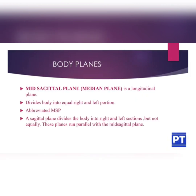There are three types of body planes. The first is the midsagittal or median plane, a longitudinal plane which divides the body into equal right and left portions, abbreviated as MSP. A sagittal plane also divides the body into right and left sections but not equally; these planes run parallel with the midsagittal plane.